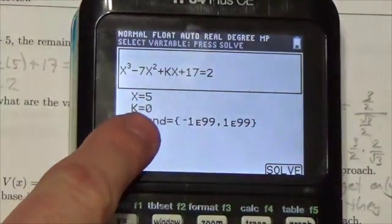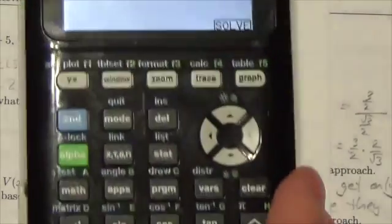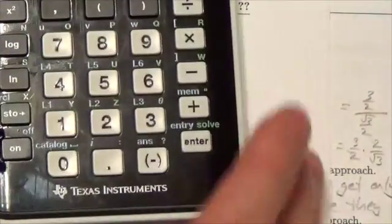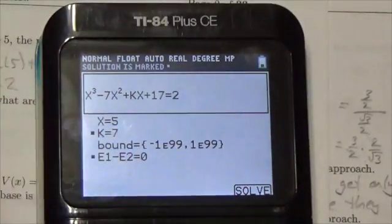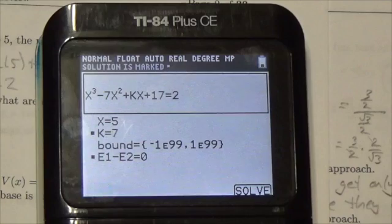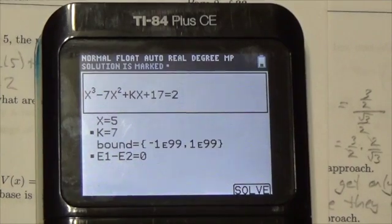So, I make sure that my cursor here is blinking on the k. I press alpha, and then I press enter, and it determines that k is equal to seven, which is exactly what I found when I did it by hand. It's a neat little tool.